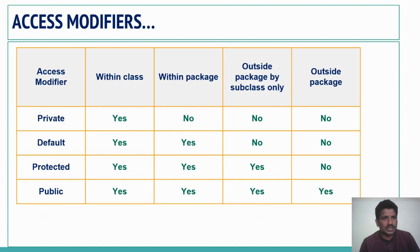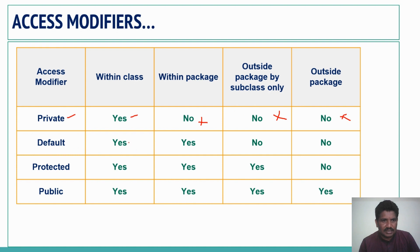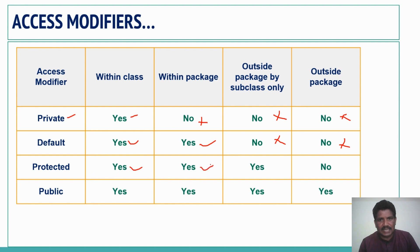Here is a comparison of the access modifiers. For private: accessible within a class, not accessible within a package, not accessible outside the package by subclass, not accessible outside the package. For default: accessible within a class, accessible within a package, not accessible outside the package by subclass, not accessible outside the package. For protected: accessible within a class, accessible within a package, accessible outside the package by subclass, not accessible outside the package without a subclass.